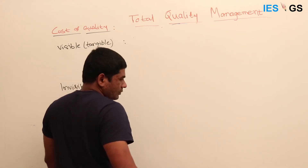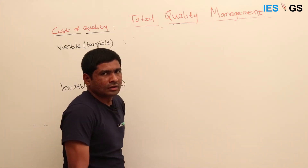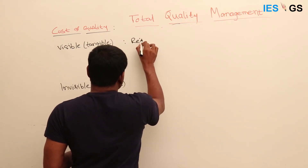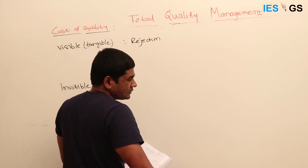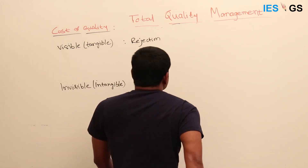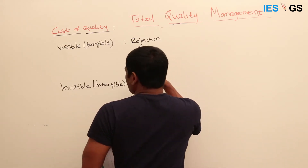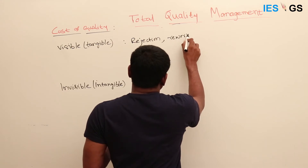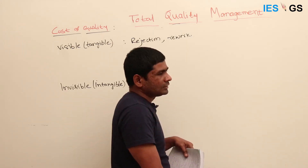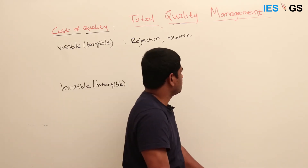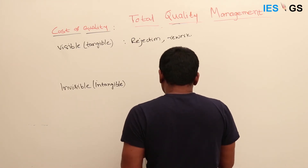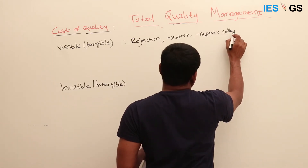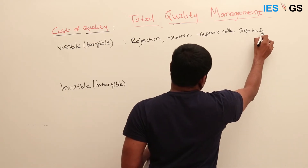Visible costs are directly visible to us — the cost related to quality is directly visible. For example, rejection of the lot: when there is a rejection during inspection, you can directly see how much quantity is being wasted for not being defect-free. Then there is rework — if you find a defect in the product, you need to rework it, and that rework and repair has a cost. There is also cost in inspection.